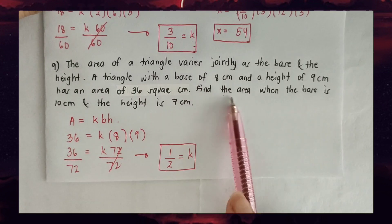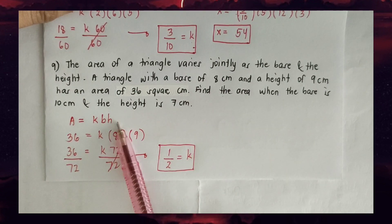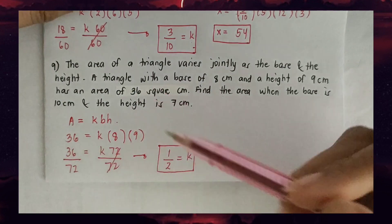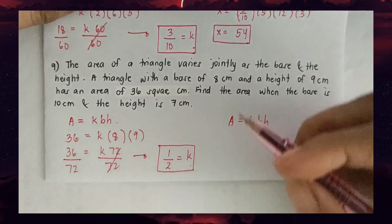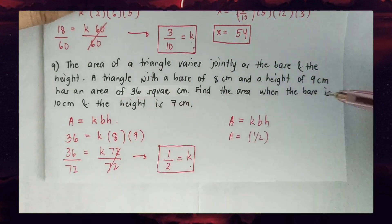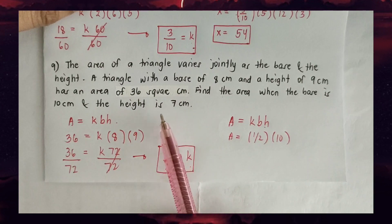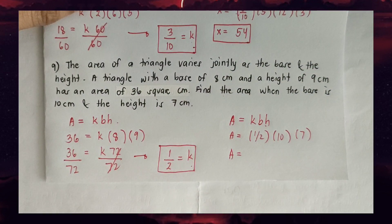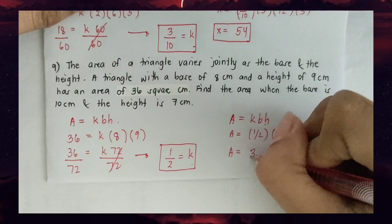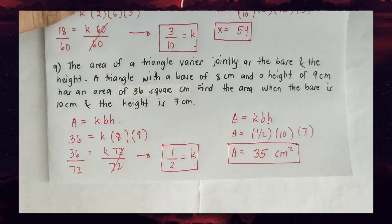Now find the area when base = 10 cm and height = 7 cm using A = kbh. Substituting k = 1/2: A = (1/2)(10)(7) = (1/2)(70) = 35 square centimeters.